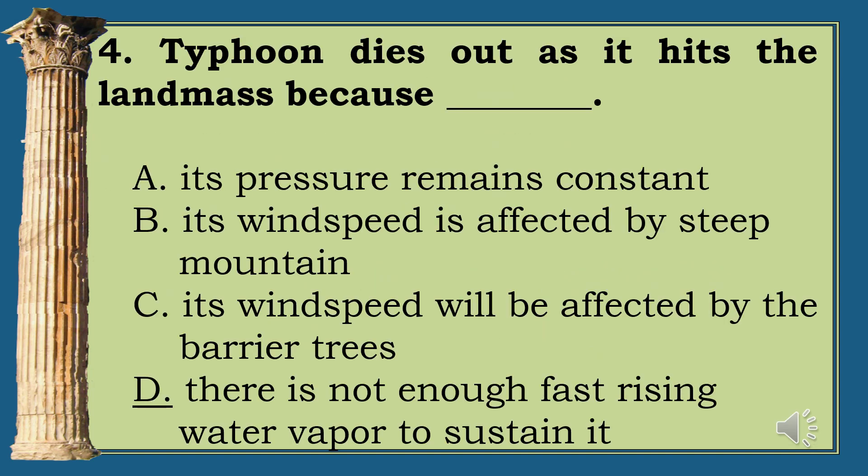Question 4: A typhoon dies out as it hits a landmass because ___. A. Its pressure remains constant. B. Its wind speed is affected by steep mountains. C. Its wind speed will be affected by barrier trees. D. There is not enough fast-rising water vapor to sustain it. The correct answer is letter D.